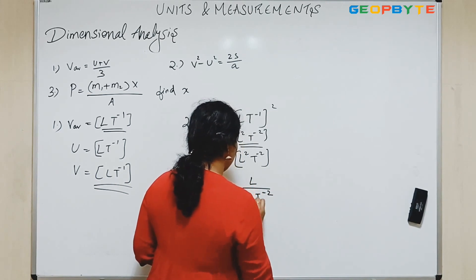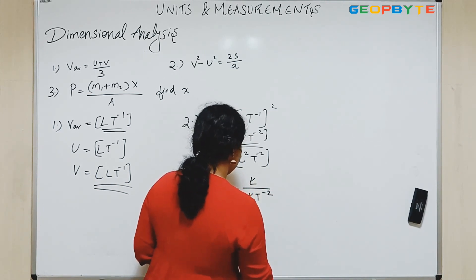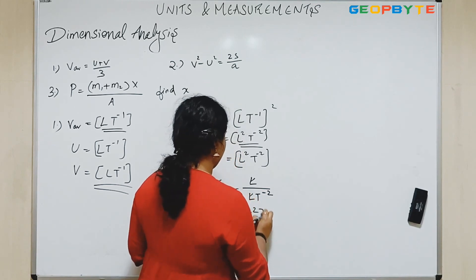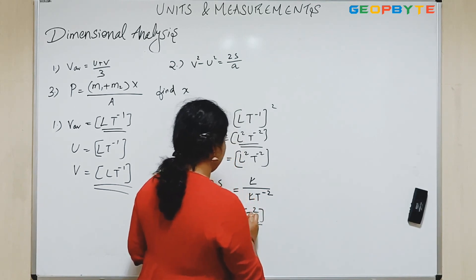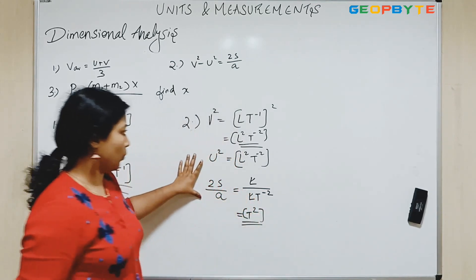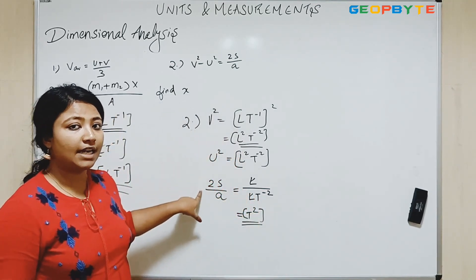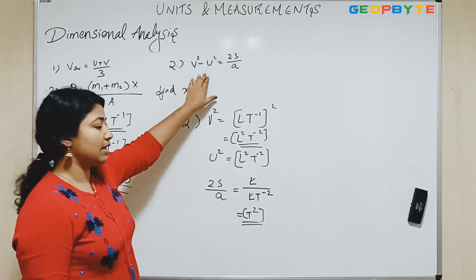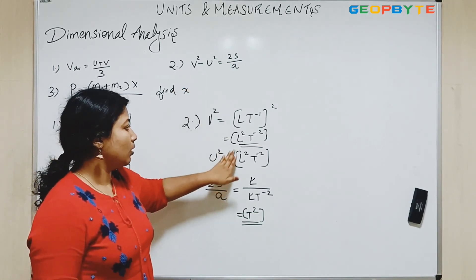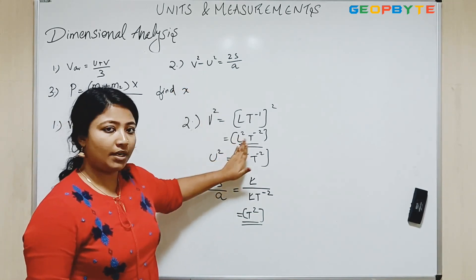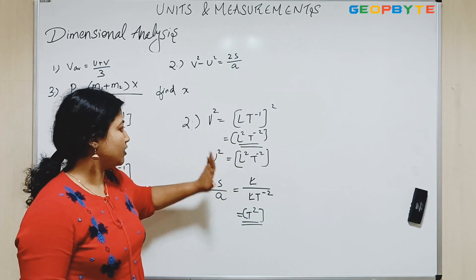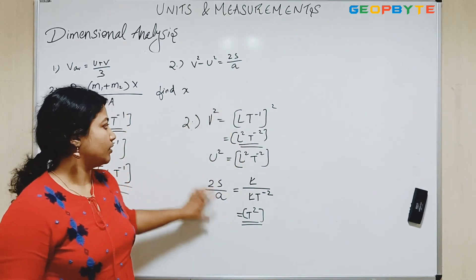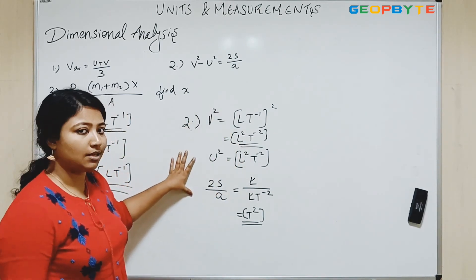So this equation v² = u² + 2aS — we check the right-hand side: 2aS gives L times L T to the power minus 2, which is L squared T to the power minus 2. But the second equation is not dimensionally consistent because the left-hand side gives one dimensional equation and the right-hand side gives another. So these are not consistent.